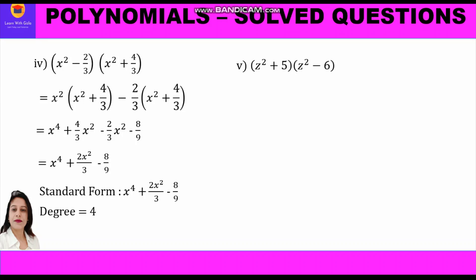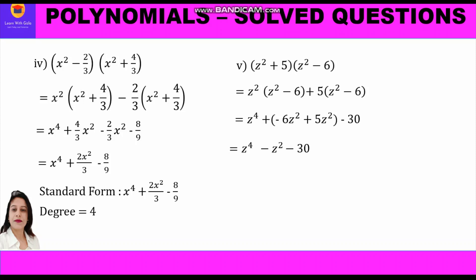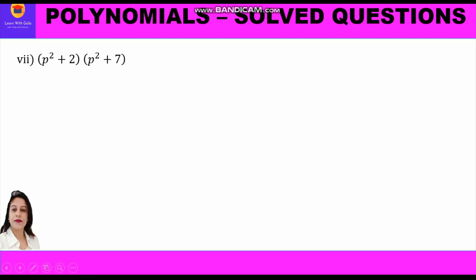Part 5: (z² + 5)(z² − 6). Expanding: z²(z² − 6) + 5(z² − 6) = z⁴ − 6z² + 5z² − 30. Combining the middle terms: −6z² + 5z² = −z². So the standard form is z⁴ − z² − 30. The highest power is 4, so the degree is 4.